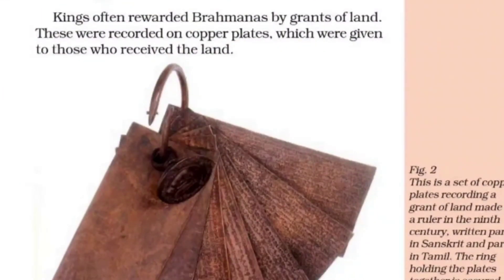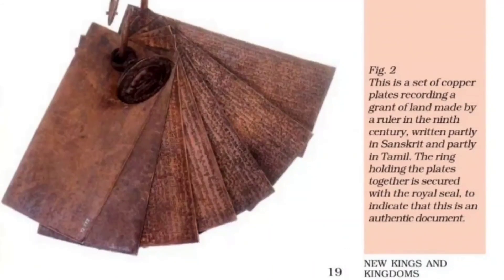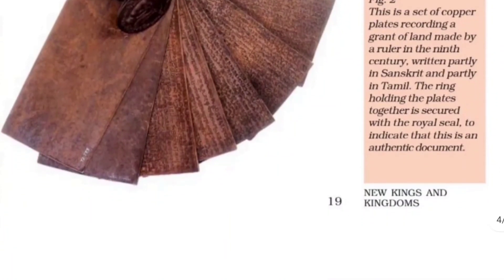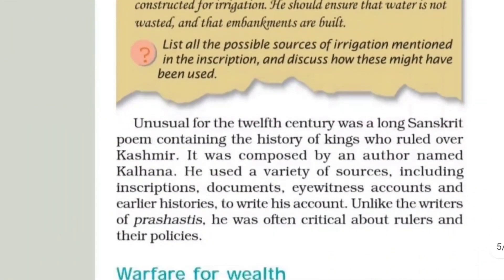Kings often rewarded Brahmans by grants of land. These were recorded on copper plates which were given to those who received the land. You can see an image of such a copper plate here, where the records were inscribed.